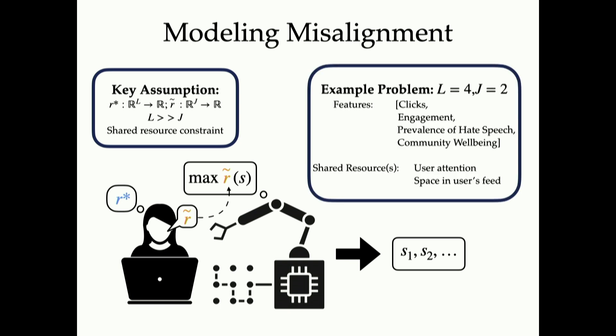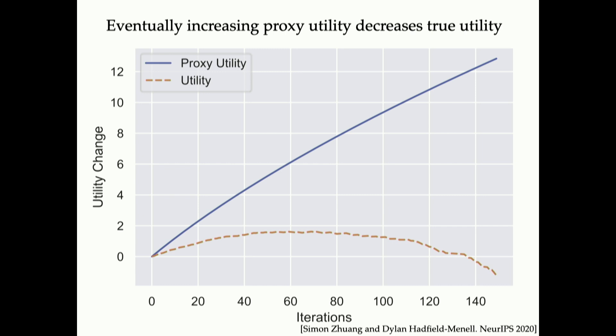An example might be if you are optimizing a recommendation system news feed, these features might be in order of complexity, things like clicks, engagement, prevalence of hate speech, or maybe community well-being. What we find is that optimizing for that proxy continues to do well. This blue line is showing your proxy utility, so it goes up and up and up. But your overall utility goes up and then crests and falls. And this is that specification gap coming back again.